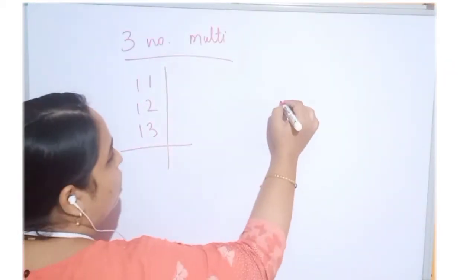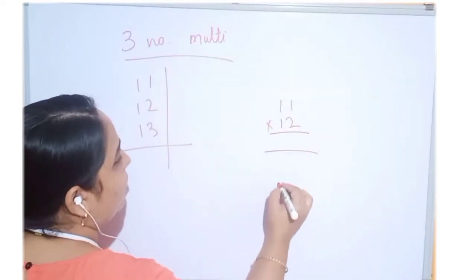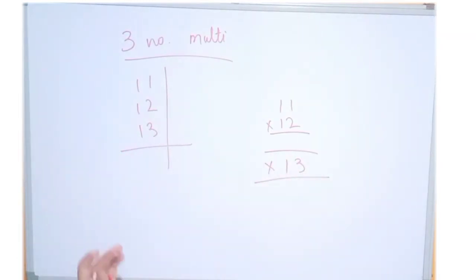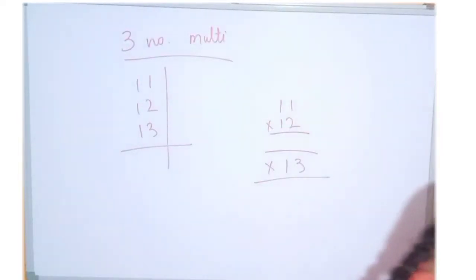In normal maths, how we do? 11 into 12, whatever the answer we'll get, in that we will multiply with 13. This is the normal maths, correct? But what if we do it with Vedic maths? We have to understand that first.